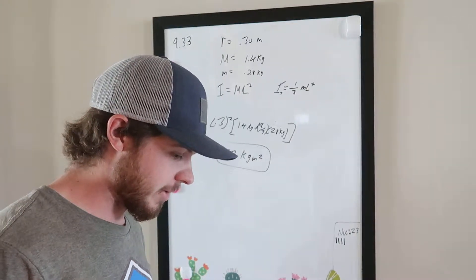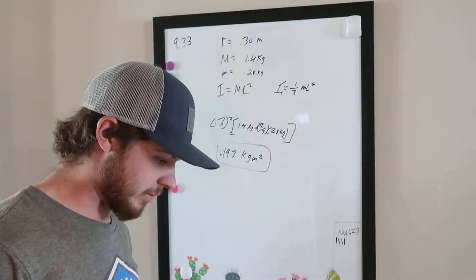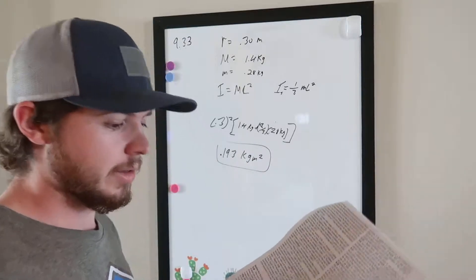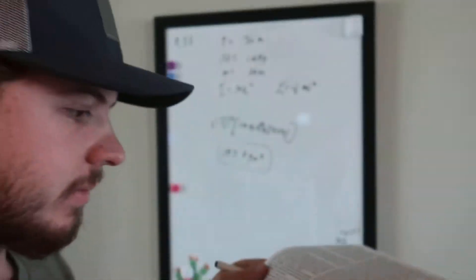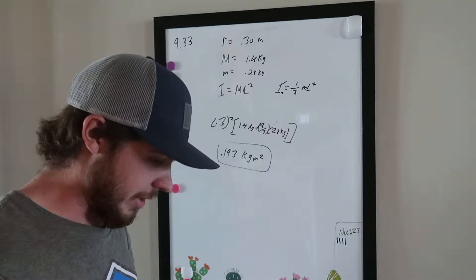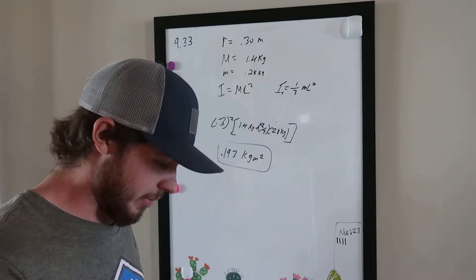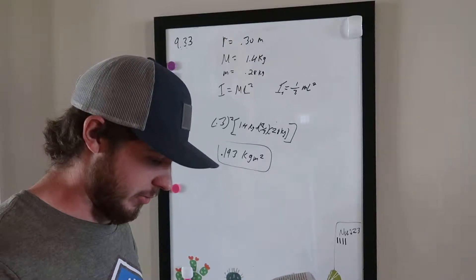We're looking at question 33 from chapter 9. It says a wagon wheel is constructed as shown in the figure. You can see that wagon wheel there. The radius of the wheel is 0.3 meters and the rim has a mass of 1.4 kilograms.